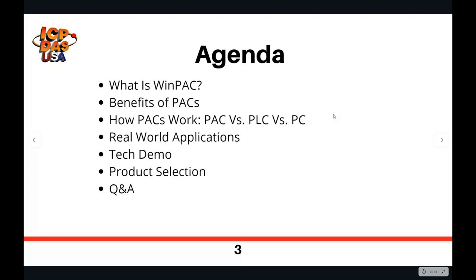Before we begin the presentation, we'll go over our topics for the day. We're going to be talking about our Windows CE based automation controllers, specifically the WinPAC 8000 series. PAC stands for Programmable Automation Controller, and Win is for Windows-based. For reference, we also sell Linux-based PACs and PACs that run our C-based Mini OS 7.